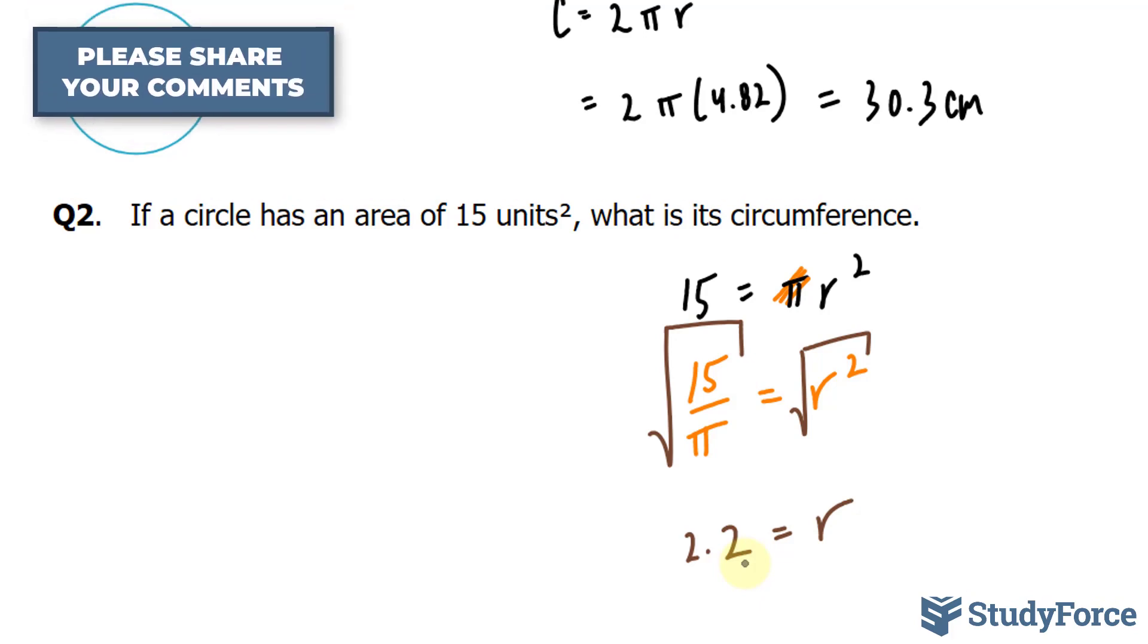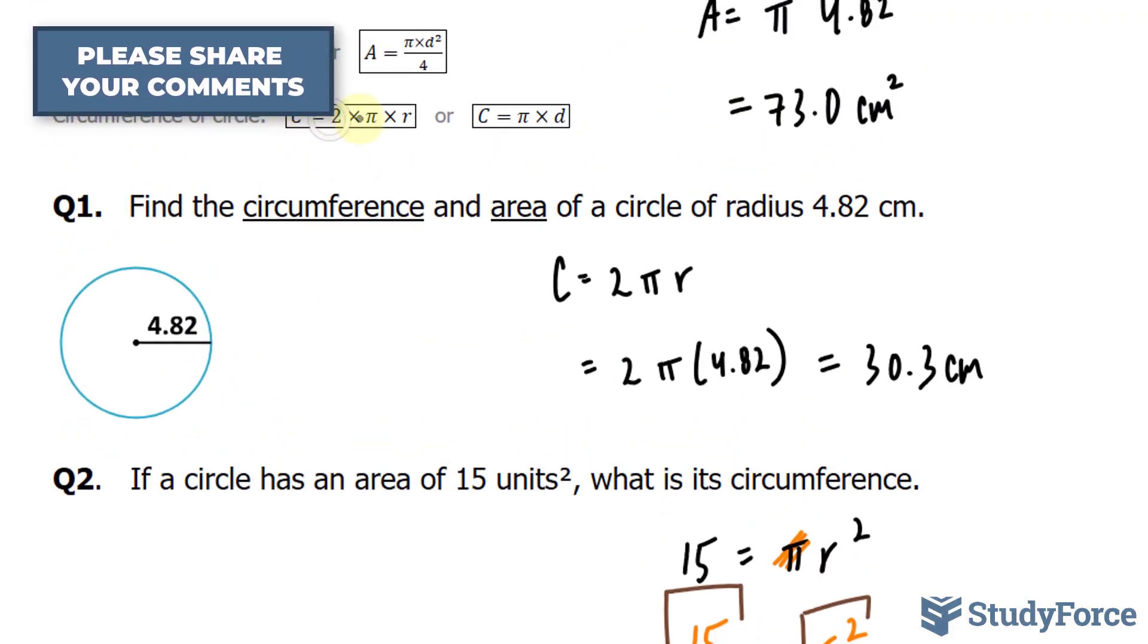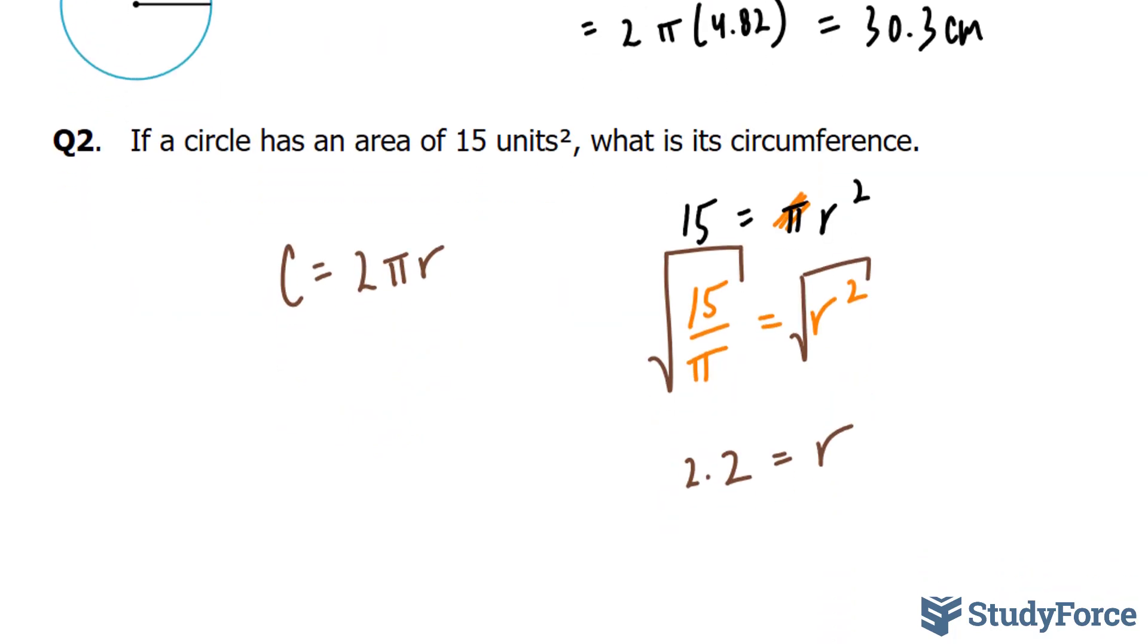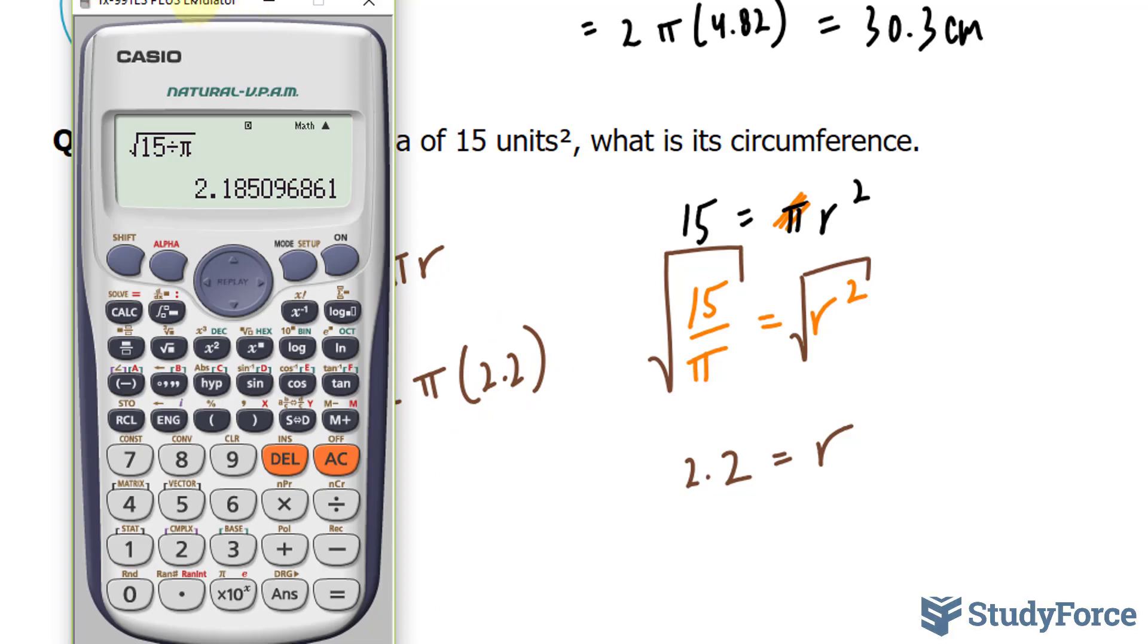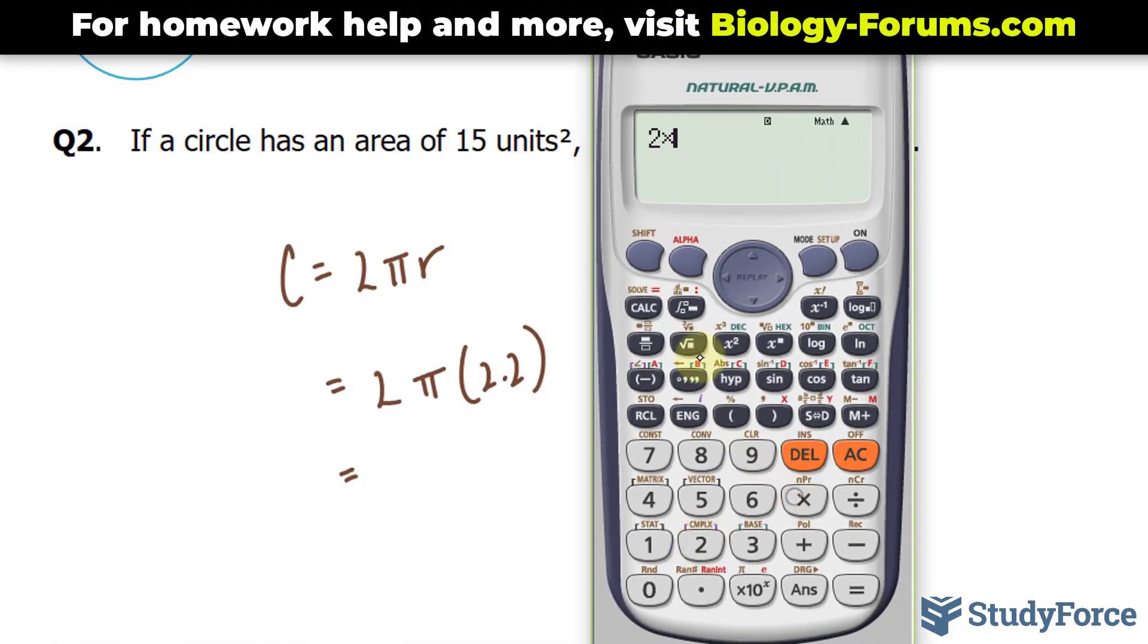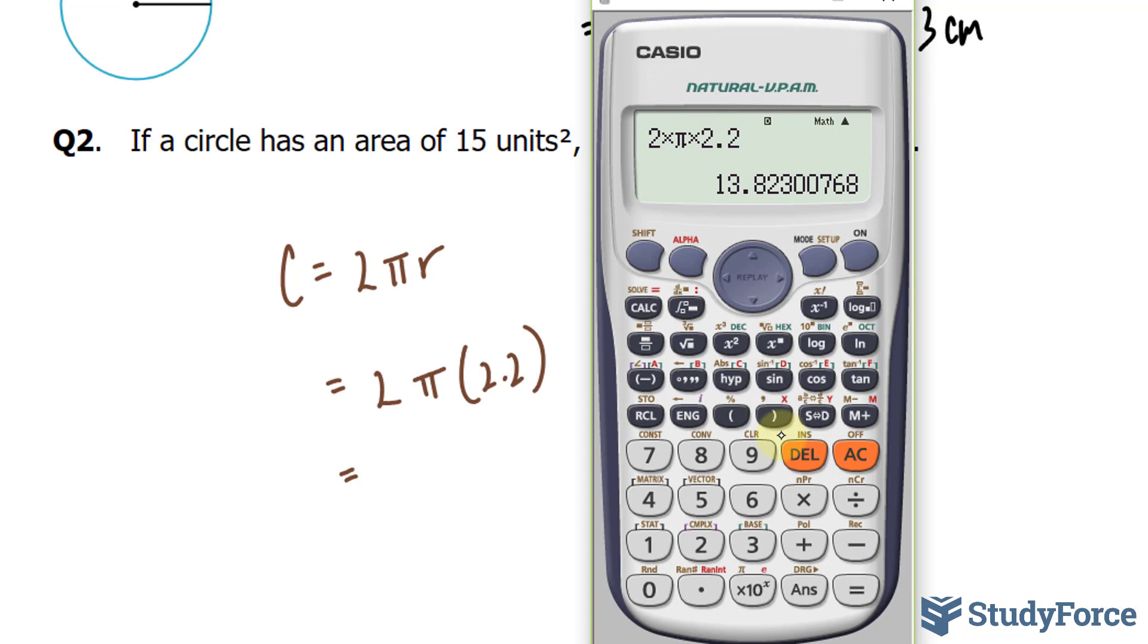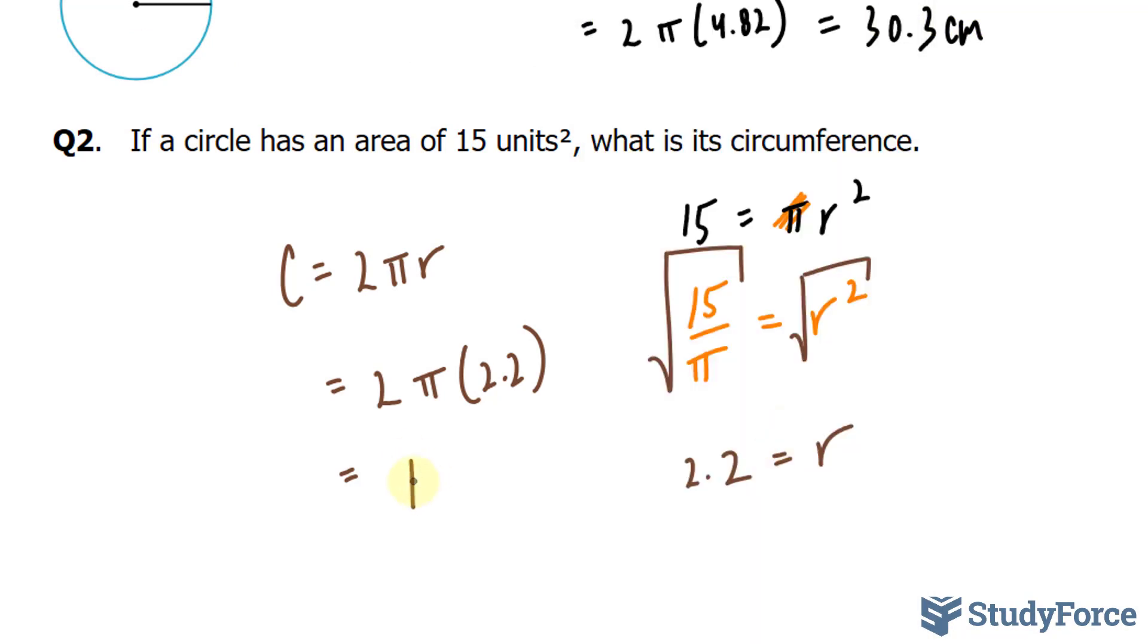Now they want the circumference, so the formula we will use is the same one that we used in question 1. We have C is equal to 2πr. And just to mention that if you want to be super accurate, you could have kept that number as it was and not rounded until the very end. But I'll just use 2.2. So I have 2 times pi times 2.2 using my calculator. 2 times pi times 2.2 gives us roughly 13.8, or rounded to 2 digits, 14 units.